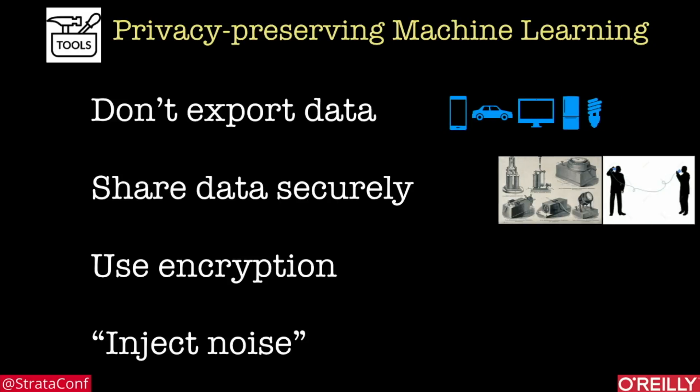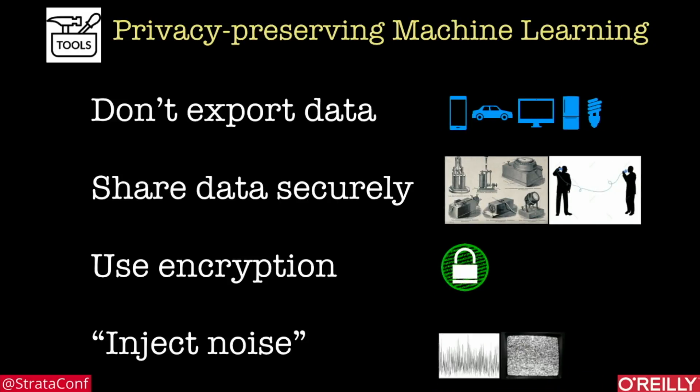First, privacy. The idea here is: how can you build models that preserve users' privacy? This is a very active area and there are some fundamental building blocks that are emerging, including for example, perhaps you can build a model without exporting or sharing data, perhaps you can use encryption, or you might be able to inject noise somewhere along the stage of model building.